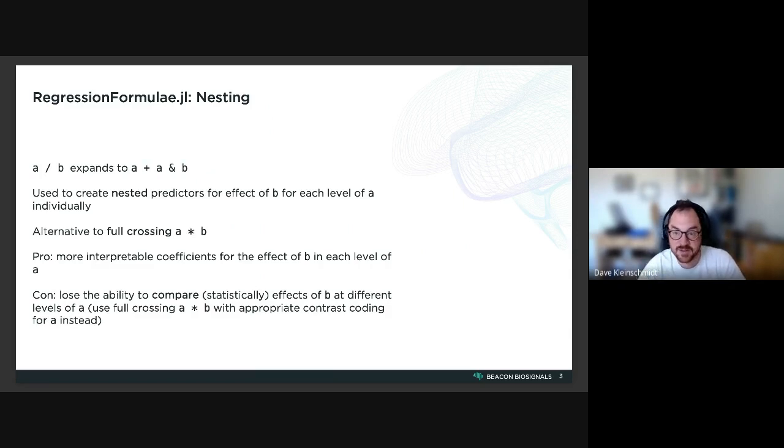Here a is a categorical variable, something that's like strings or symbols with a discrete number of levels.